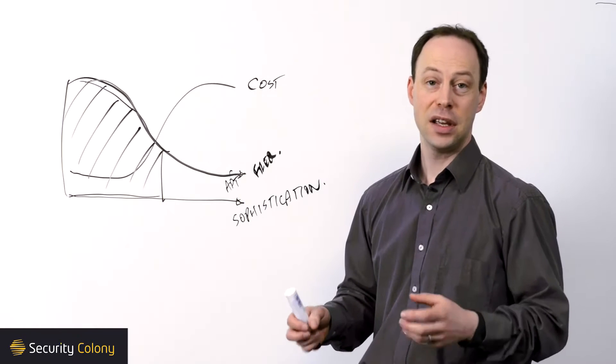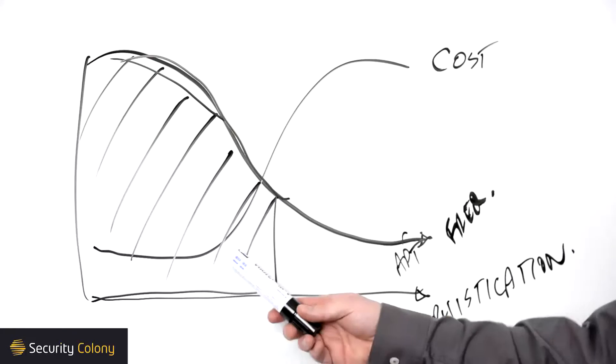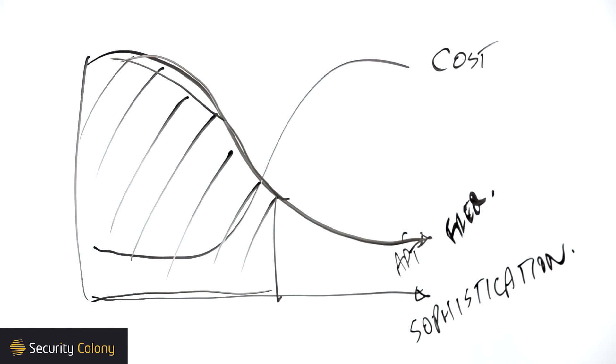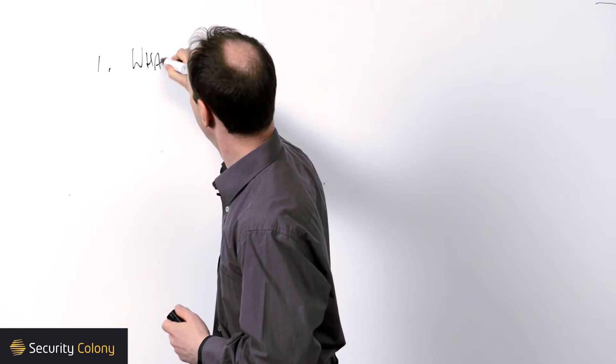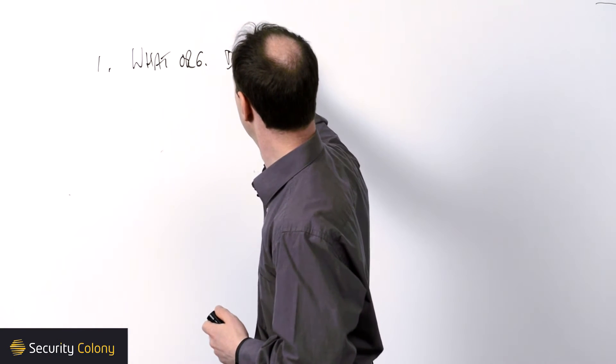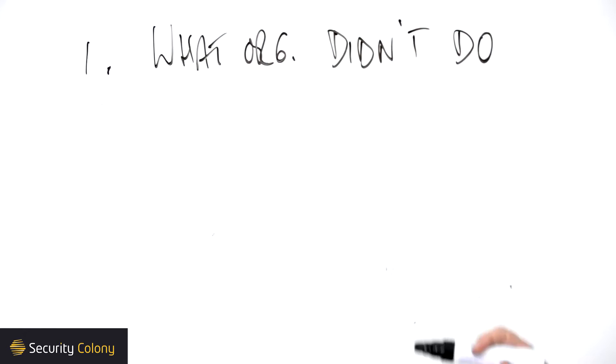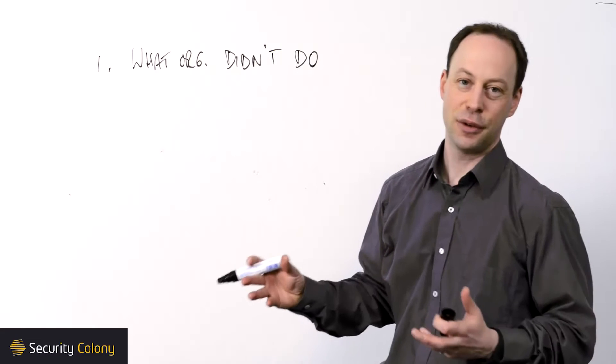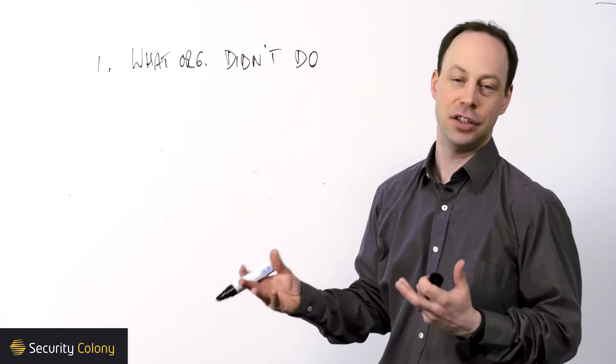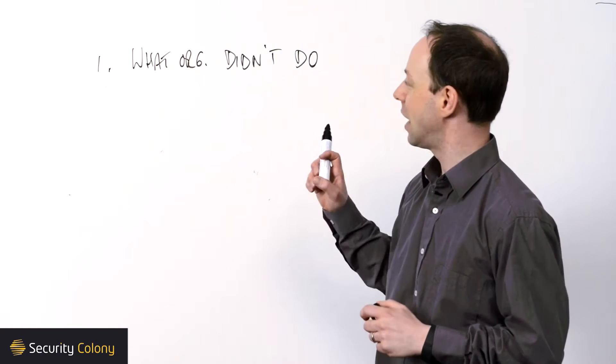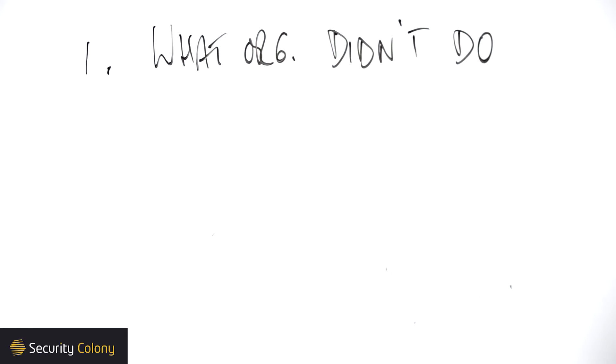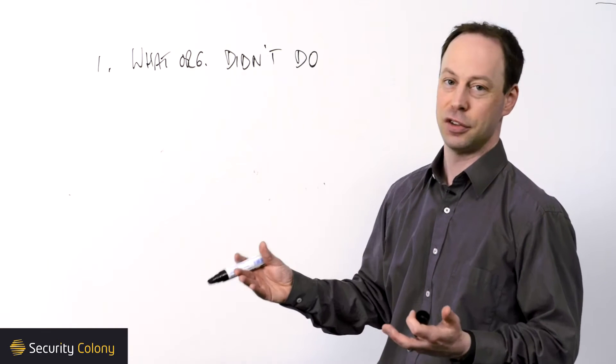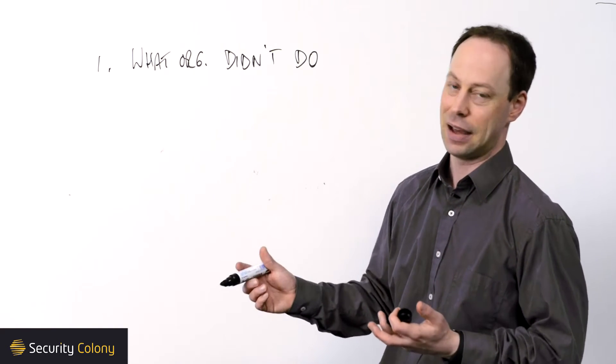Next, I'm going to talk about the three source data sets that feed into defining what that Minimum Viable Security is. The first is what organizations didn't do. The concept here is that organizations that suffer security breaches have obviously been lacking a security control of some kind. If we can define what that control was that was missing, then there's a pretty good justification for saying that's going to be a required control for your organization because there is demonstrated evidence of people losing data, being compromised because they didn't have it in place.